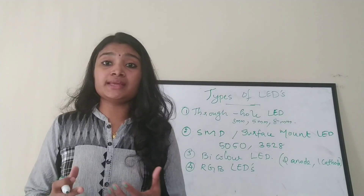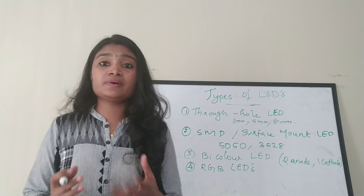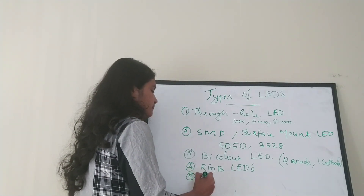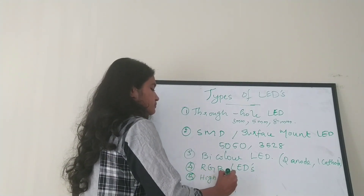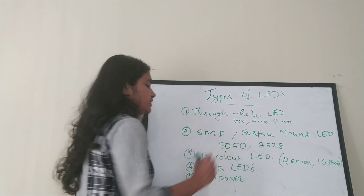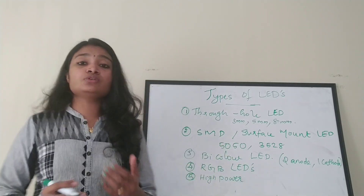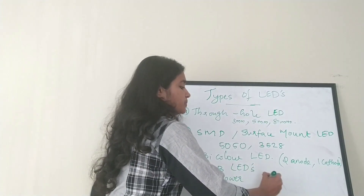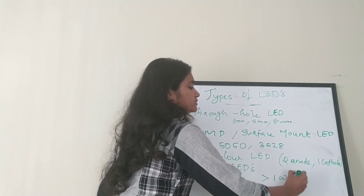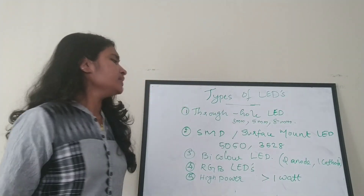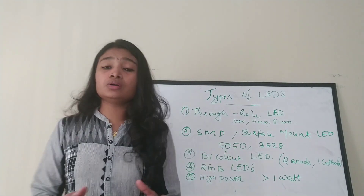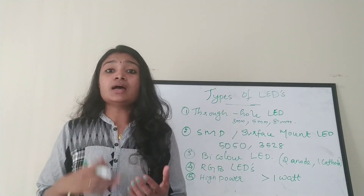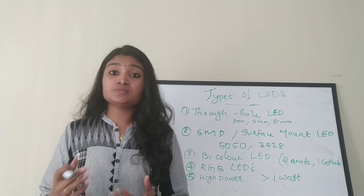The last main category is high power LEDs, which is the fifth category. They have a power rating of greater than one watt. They are used for high-end applications such as spotlights and other demanding lighting applications.